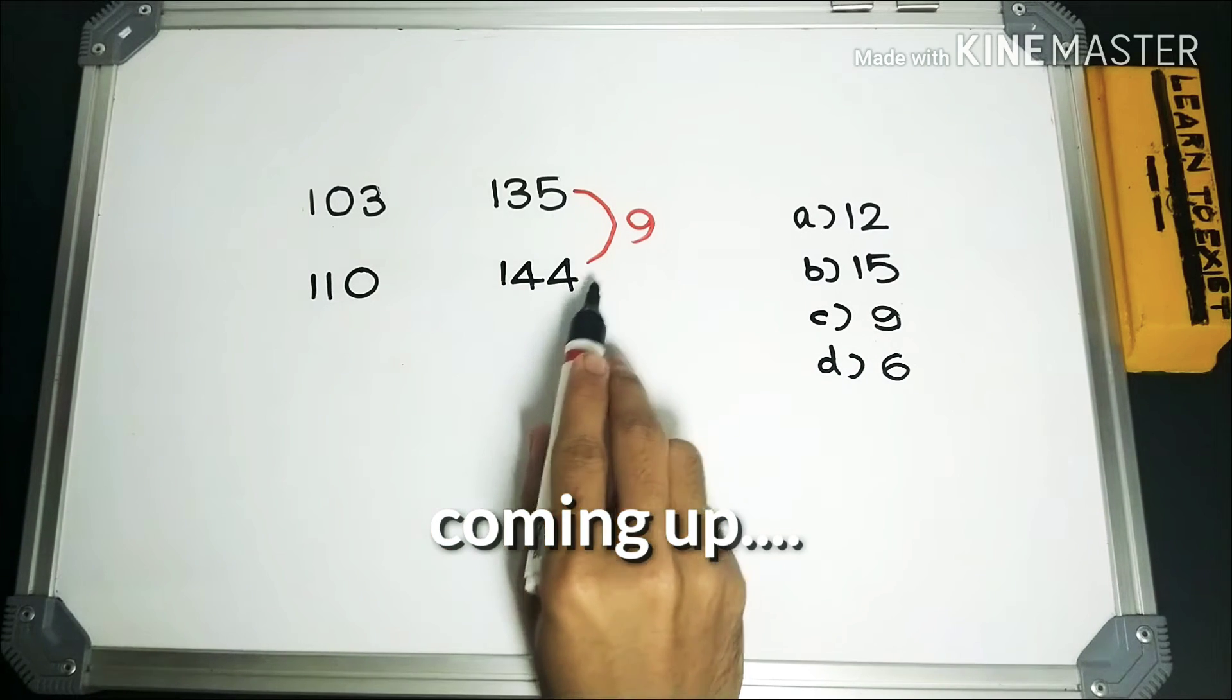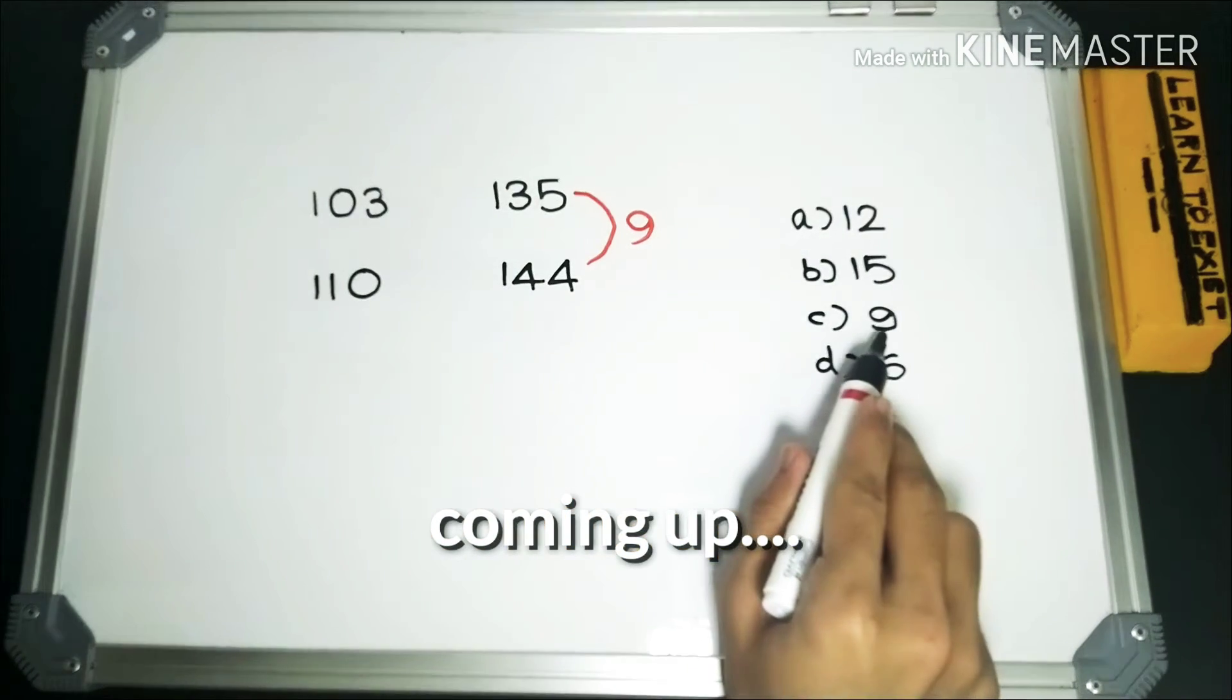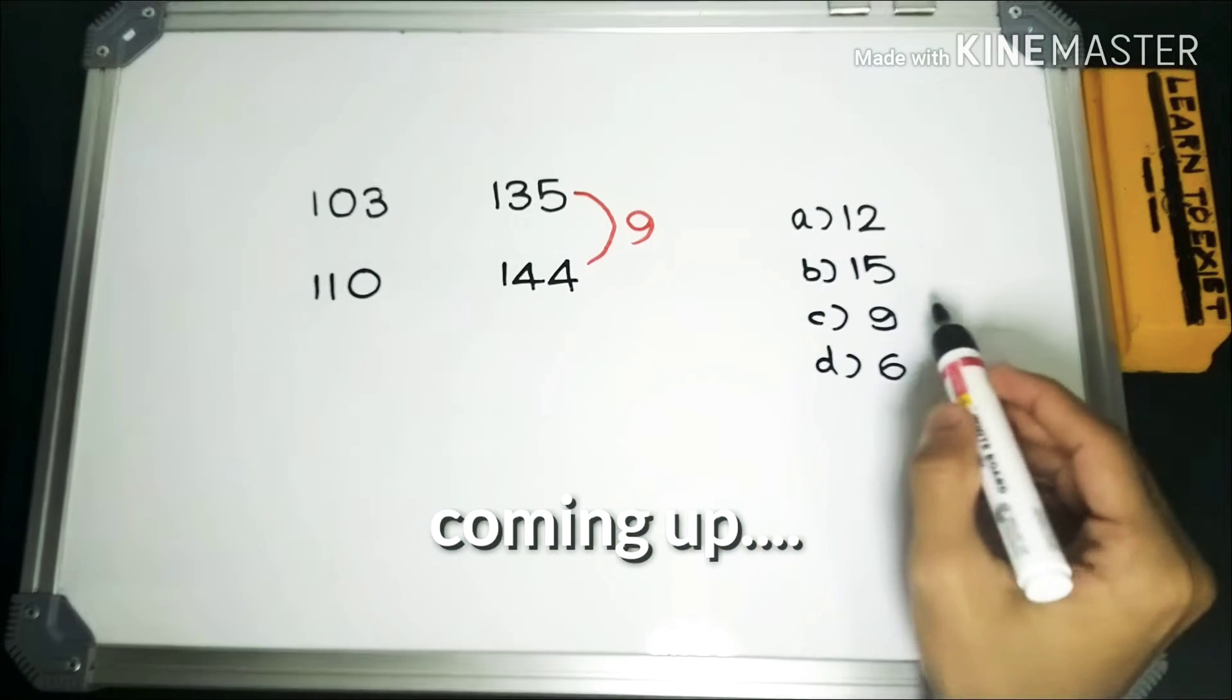The difference of these two numbers will be 9, and 135 plus 9 will give us a multiple of 9, so this would be the answer.